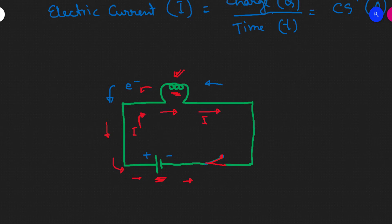The conventional electric current direction is from positive to negative. If you have a historical background, you can see that the electron is very important. If you know the conventional current direction, you can see that it is opposite to the actual electron flow direction. The conventional current direction is very important in physics.